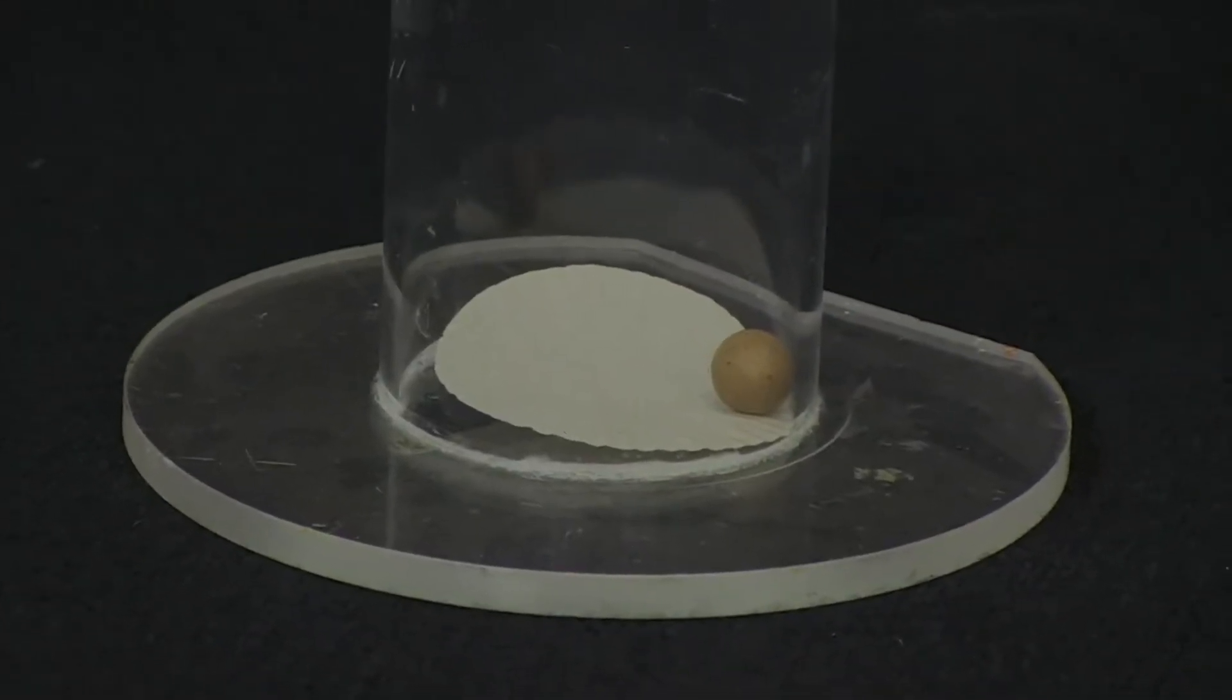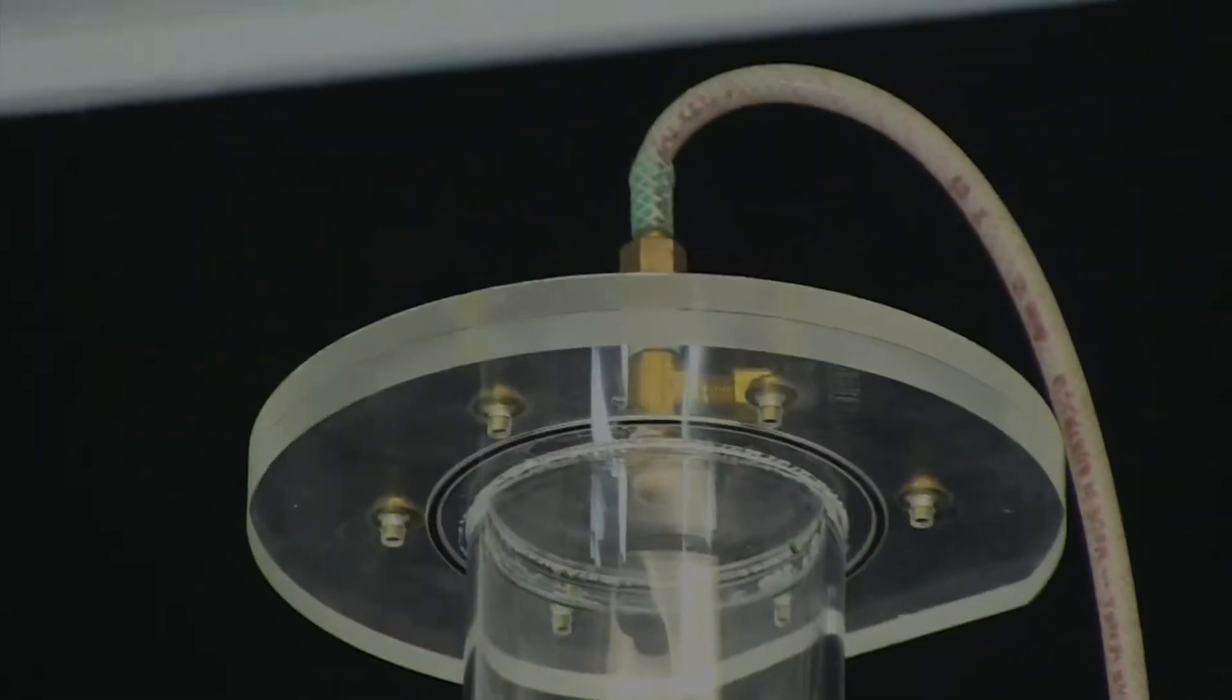What we have here is a perspex tube from which we can remove all the air. You can see the patty case and the ceramic ball down the bottom. The patty case is very light and has a large surface area. The ceramic ball is heavy and has a small surface area. The air is removed by attaching a vacuum to this tube at the top.